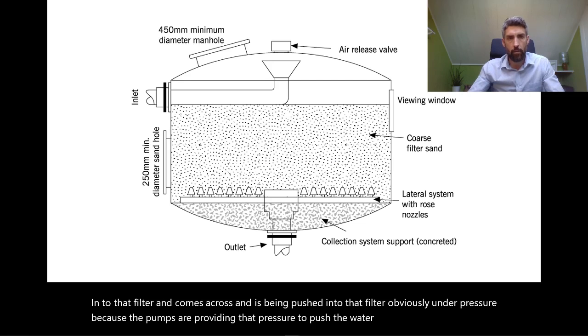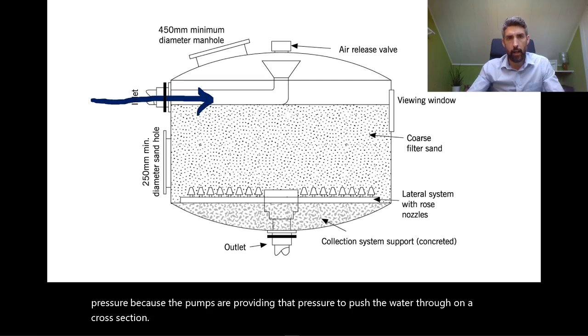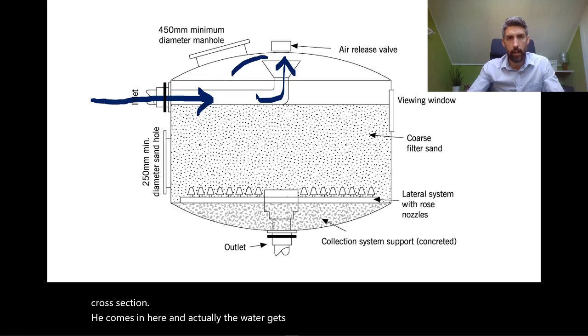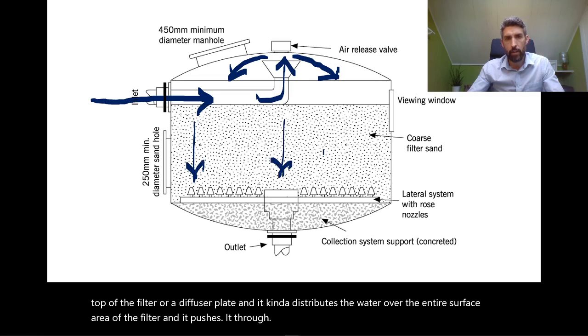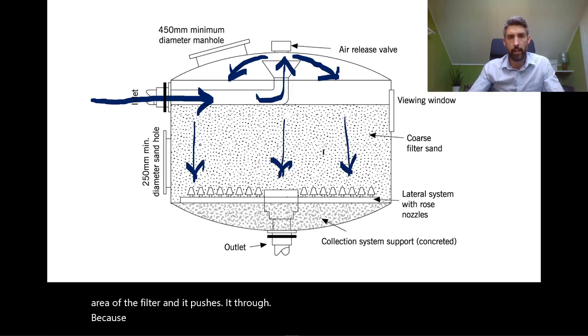On a cross-section it comes in here and the water gets directed upwards, hits the underside of the top of the filter or a diffuser plate, and it distributes the water over the entire surface area of the filter and pushes it through because there's a bed of sand inside the filter.